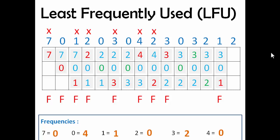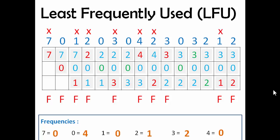The next page is 2, which is not present in the page frame. We check 3, 0, and 1's frequencies — 0 has the highest frequency, so we choose between 3 and 1. Between them, 1 has the least frequency, so we remove 1 and add 2. 0 and 3 will remain there, 2 will get added, and there will be a page fault. 2's frequency will get increased.